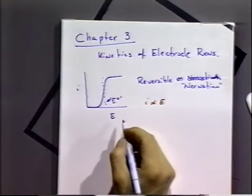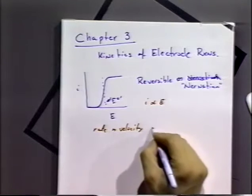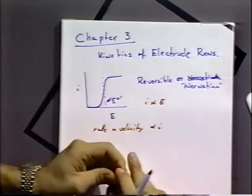We've also noticed that the rate or velocity of an electrode reaction is proportional to the current. So by monitoring the current, we can get some information about the rate or velocity of an electrode reaction. For a Nernstian situation, we're basically looking at the rate of mass transport to the surface, whereas in a kinetically limited situation, either the kinetics completely determine the rate, or a mixture of mass transport and kinetics determines the current we see at the electrode surface.